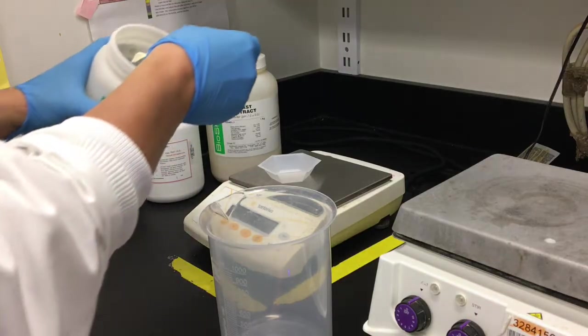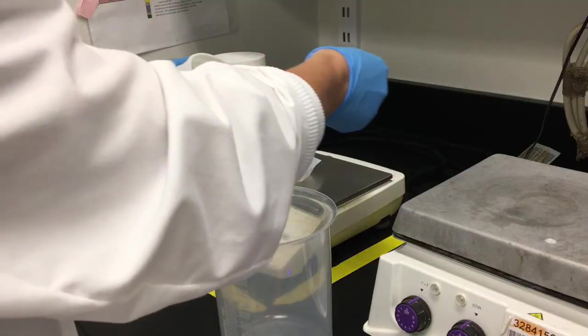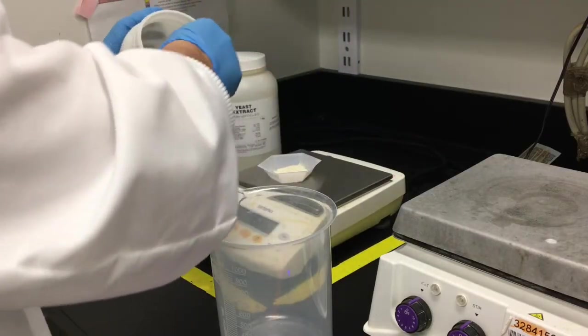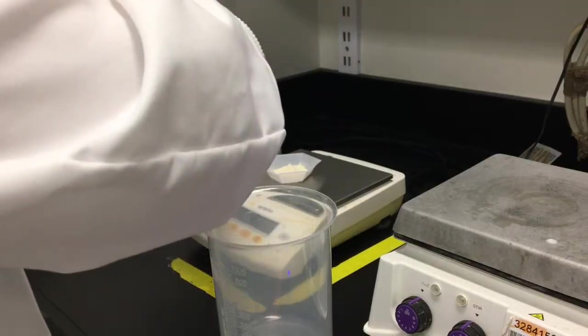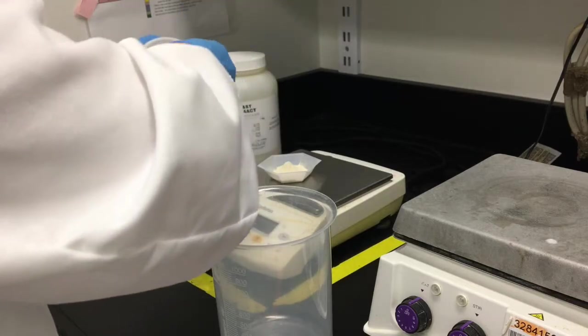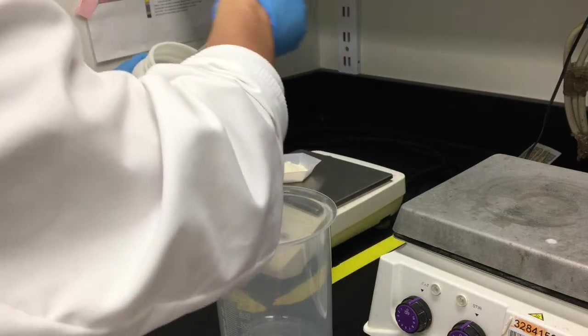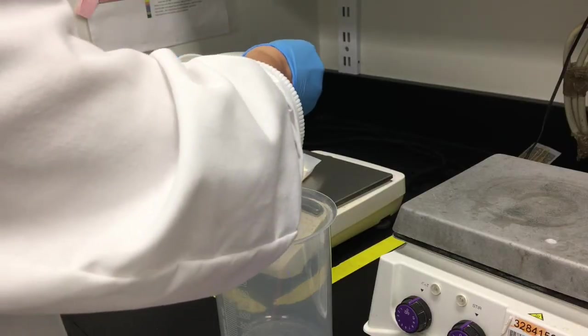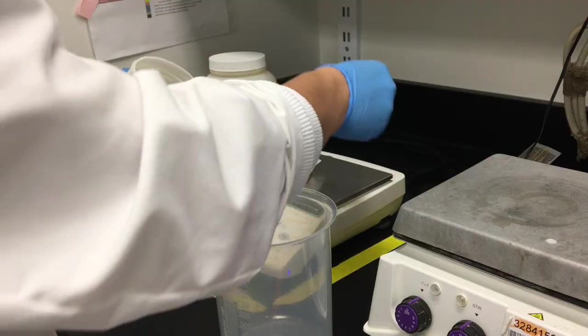The first thing we're going to need to do is make some media. For E. coli cultures this would typically be LB media, or you could use 2YT media or terrific broth depending on your specifications. I'm going to make some LB media. The recipe for LB is 10 grams of tryptone powder, 5 grams of yeast extract, and 10 grams of sodium chloride per liter. I'm going to make a liter of media.